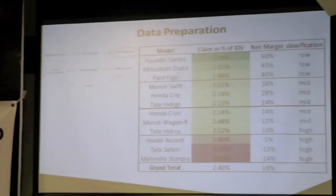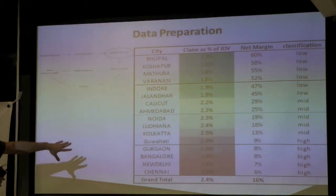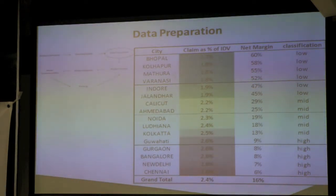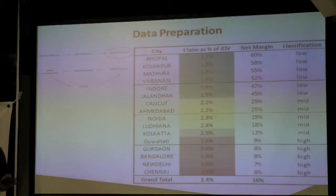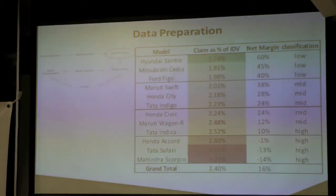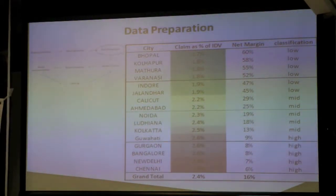We did the same with cities — some are highly profitable, some are actually loss-making. Looking at the names, smaller cities tend to be very profitable while larger cities tend to be unprofitable. This intuitively makes sense because larger cities have more traffic and a higher likelihood of accidents. From both tables, you can see the company should probably charge a higher price for SUVs — Tata Safari and Scorpio appear right at the bottom — and for vehicles registered in larger cities.